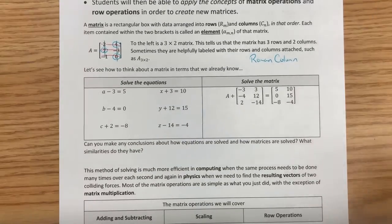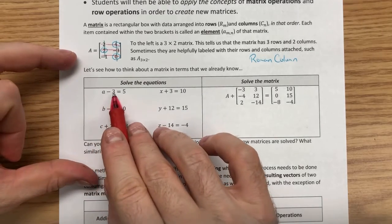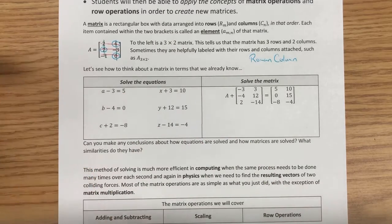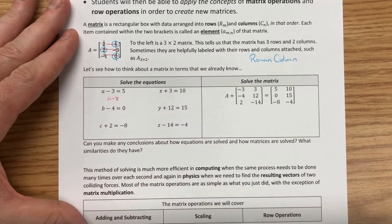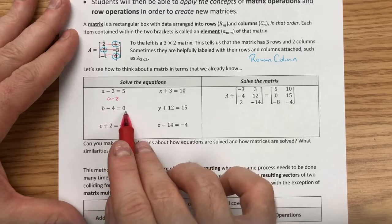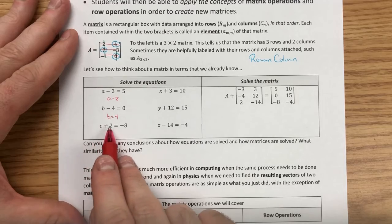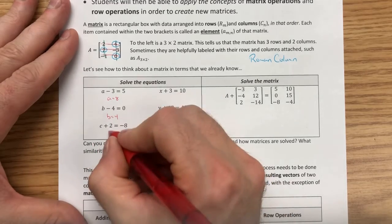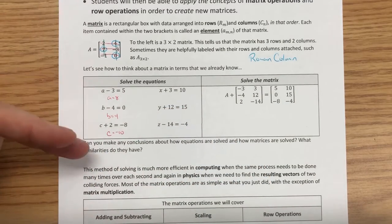But before we begin, how do we think about a matrix in terms of something that we already know? Let's look at the set of equations over here on your left. How would we solve these? One way to solve them is to look at the equation and say, what minus 3 is equal to 5? You might say, if A was 8, 8 minus 3 is equal to 5. If I said, what minus 4 is equal to 0? If B was 4, 4 minus 4 is equal to 0. If I said, what plus 2 is equal to negative 8? That would be if C was negative 10 plus 2 would give us a negative 8.